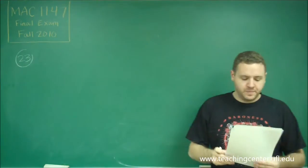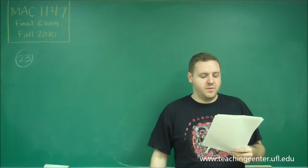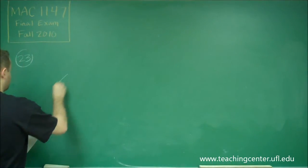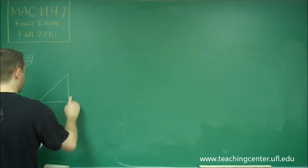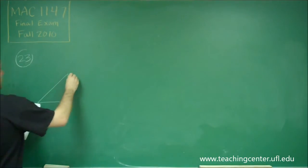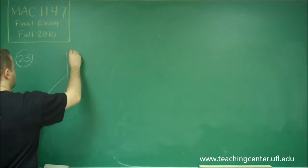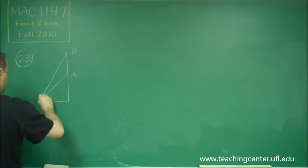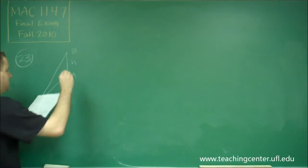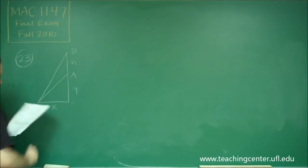Number 23: we have a hot air balloon that's rising vertically at a rate of one foot per second. Let me draw out the picture here. We have a balloon at point A, rising up to point B. We're going to call this distance H, this distance Y, and that distance X.